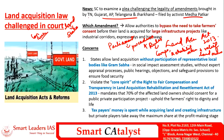Several states including Tamil Nadu, Gujarat, Andhra Pradesh, Telangana, and Jharkhand introduced amendments to facilitate land acquisition in their states. These amendments allow authorities to bypass the need to take farmers' concerns before acquiring their lands for large infrastructural projects, raising concerns among farmers and civil society activists. Any infrastructural development project should start only after completion of social impact assessment studies, which should have representations from local bodies like Gram Sabha. These amendments led to a situation where Gram Sabha members are not allowed to participate in the social impact assessment studies.